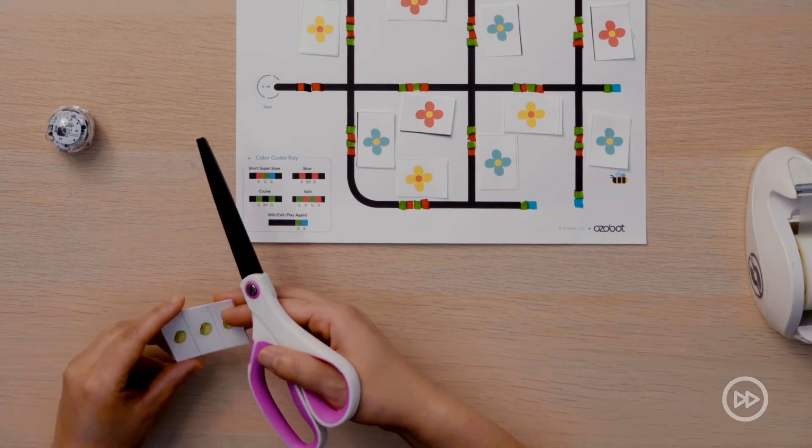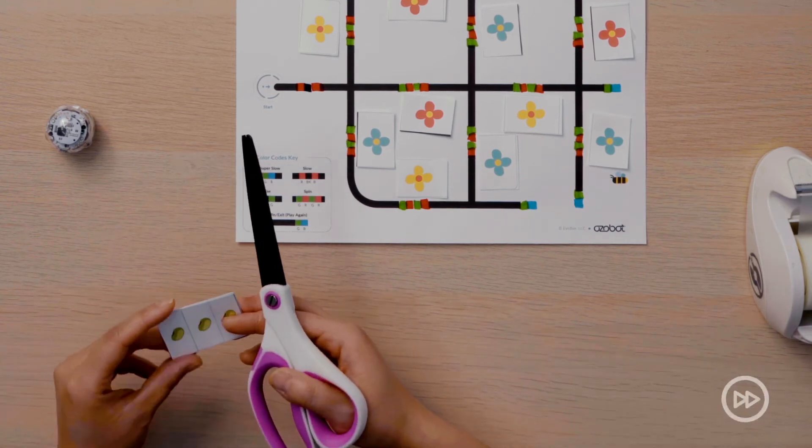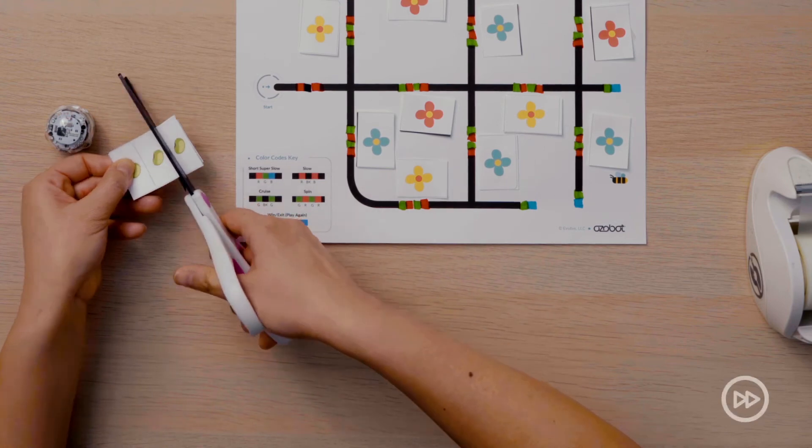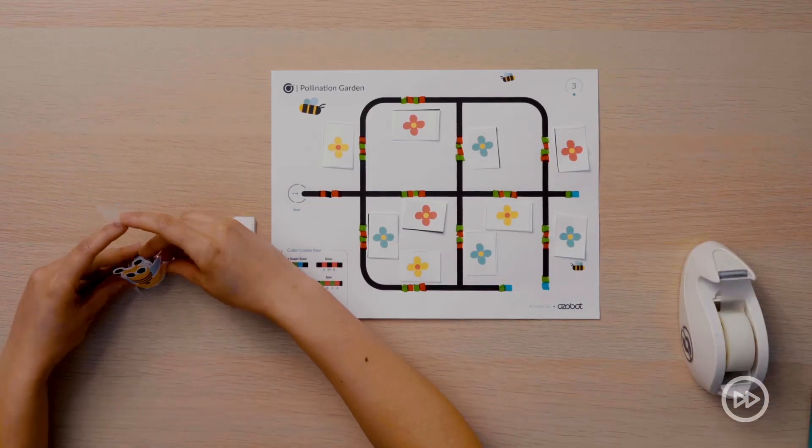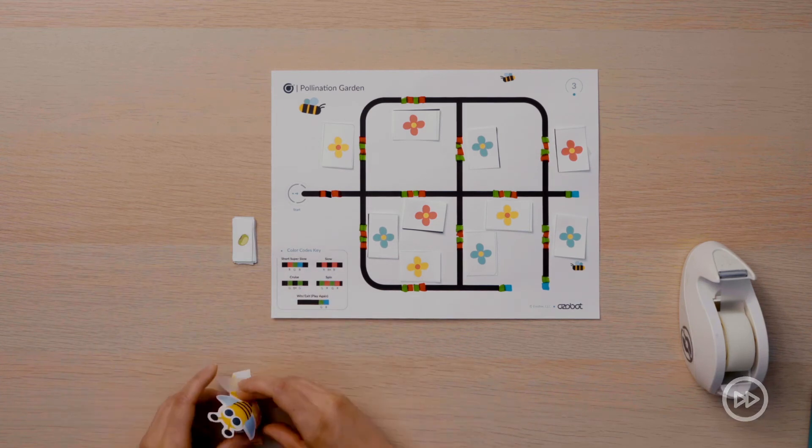After you cut out your seeds, you will choose what animal or pollinator your bot is going to act like and create a costume to match. I chose my bot to be a bee. First, I designed the costume. Then I cut the costume out and taped it around my bot.